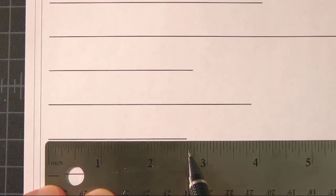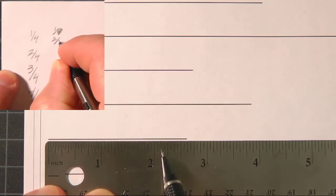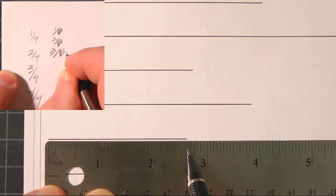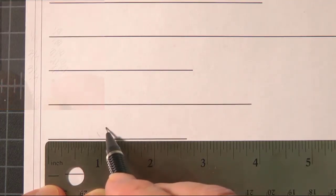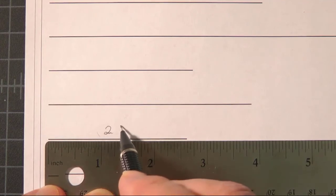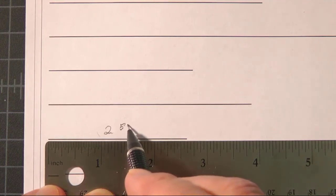So two and a half plus an eighth. Well, we know we have four eighths in a half, so this must be five eighths. So this is two inches, or two and five eighths inches.